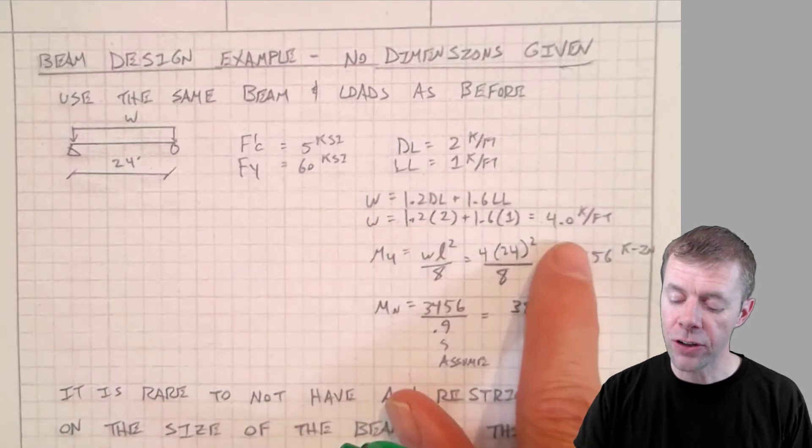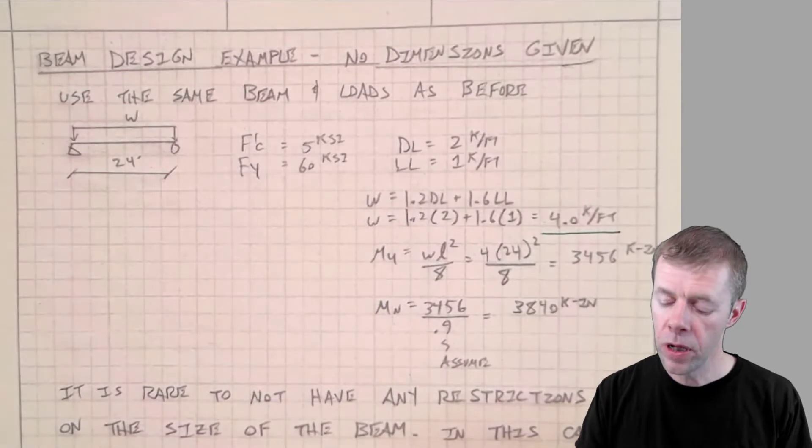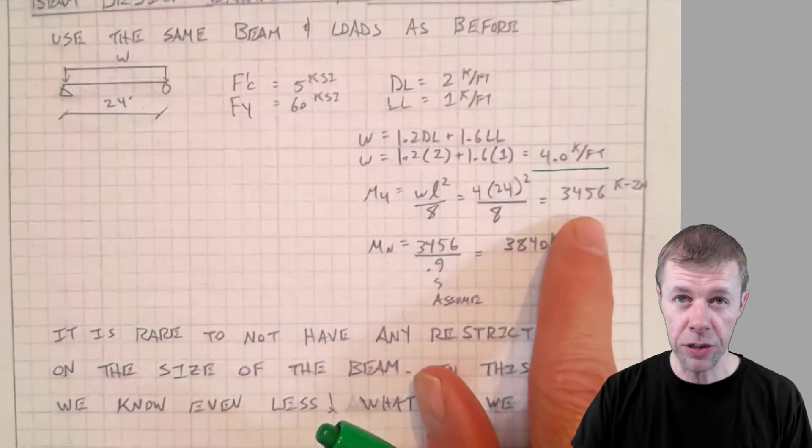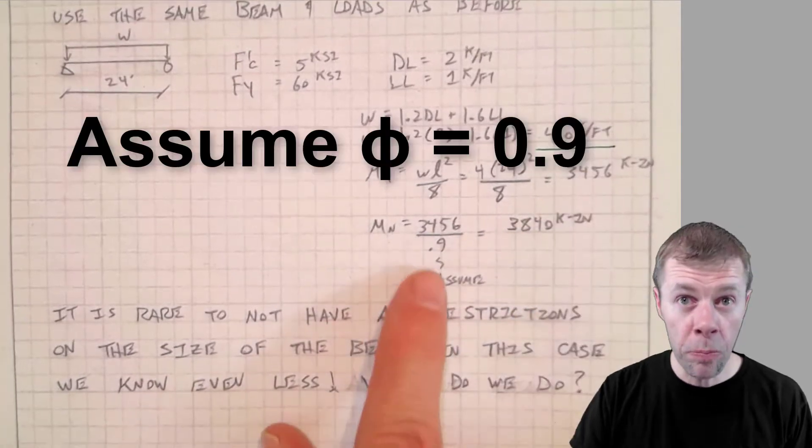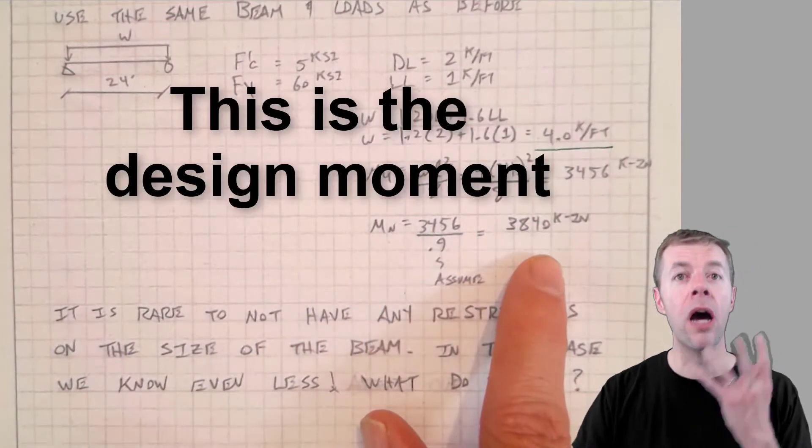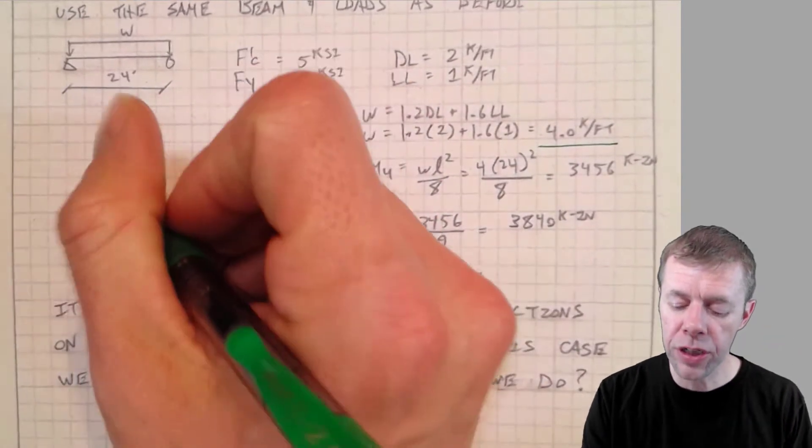We use the load factors to factor that to get my 4 kip per foot load. Here's our maximum moment, 3456 kip inches. I'm going to assume phi = 0.9 and I get 3840 kip inches. But I'm missing something.